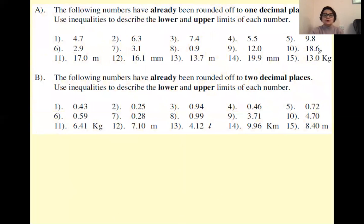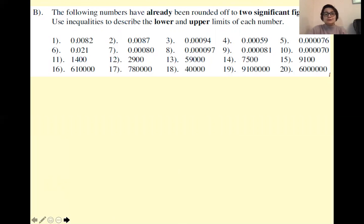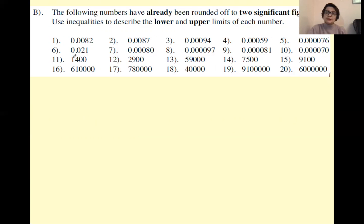Here you have many other numbers to work on independently. Numbers have to be rounded to one decimal place for the first set and two decimal places for the second. In the next slide, there are many numbers for you to describe the lower and upper bounds — not to round, but to describe — to two significant figures. Choose any number you want and work independently. Follow exactly the same strategy: identify the significant figure, find the place value of that digit, halve it, add it to the number for the upper bound, take it away for the lower bound. When you write inequalities, it's smaller than the upper bound and greater than or equal to the lower bound. Thank you very much for watching Math Steps — have a lovely day, bye bye!